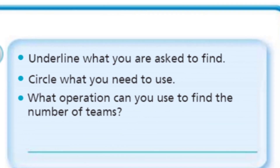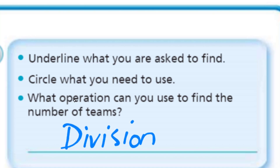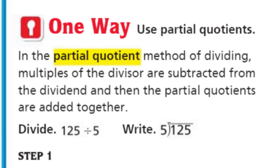What operation can you use to find the number of teams? Maybe something called division. Yes, division — that's the operation. There's only four operations and division is one of them. Now we have one way: use partial quotients. I'm going to be honest with you — there's a lesson similar to this in fifth grade as well.